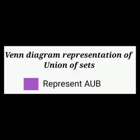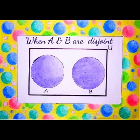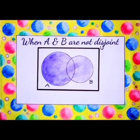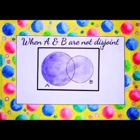Venn diagram representation of union of sets. Let us consider A and B as two sets. When sets A and B are disjoint, meaning there are no common elements between them, the shaded region represents A union B. When A and B are not disjoint, or if they have common elements between them, the shaded region also corresponds to A union B.